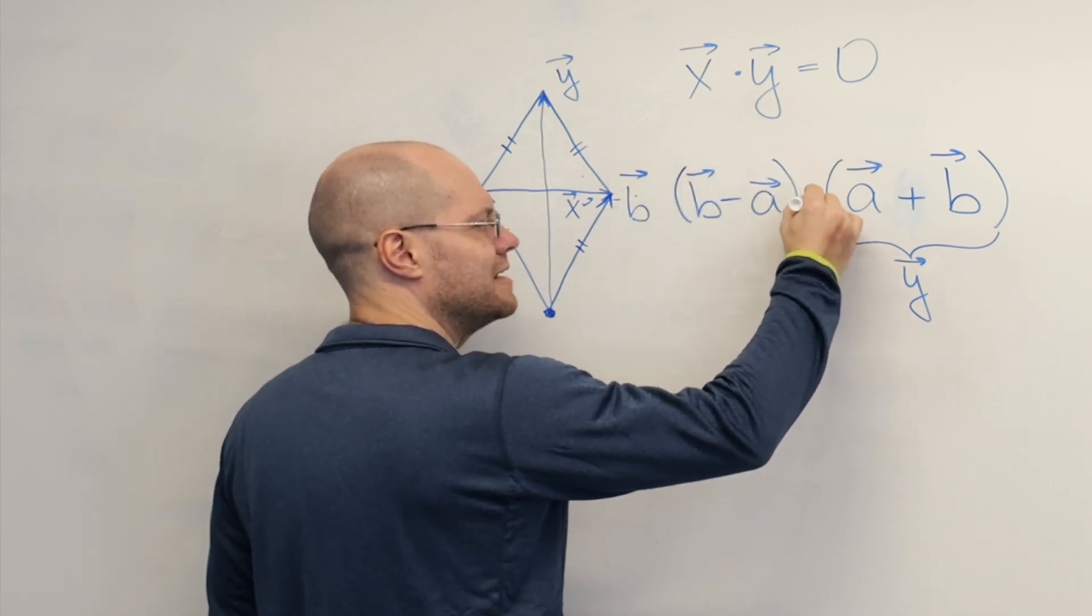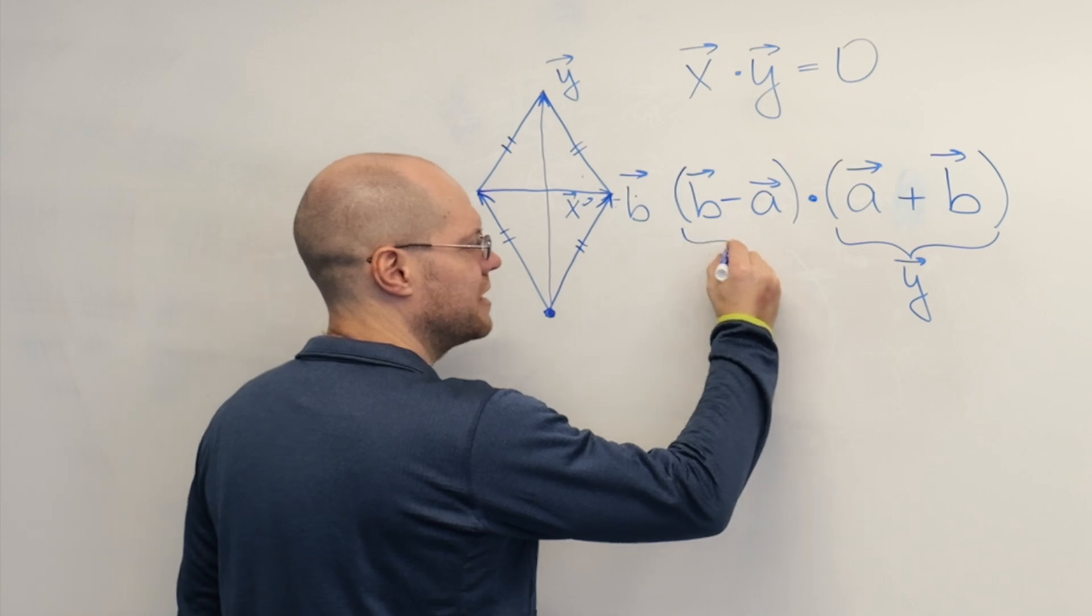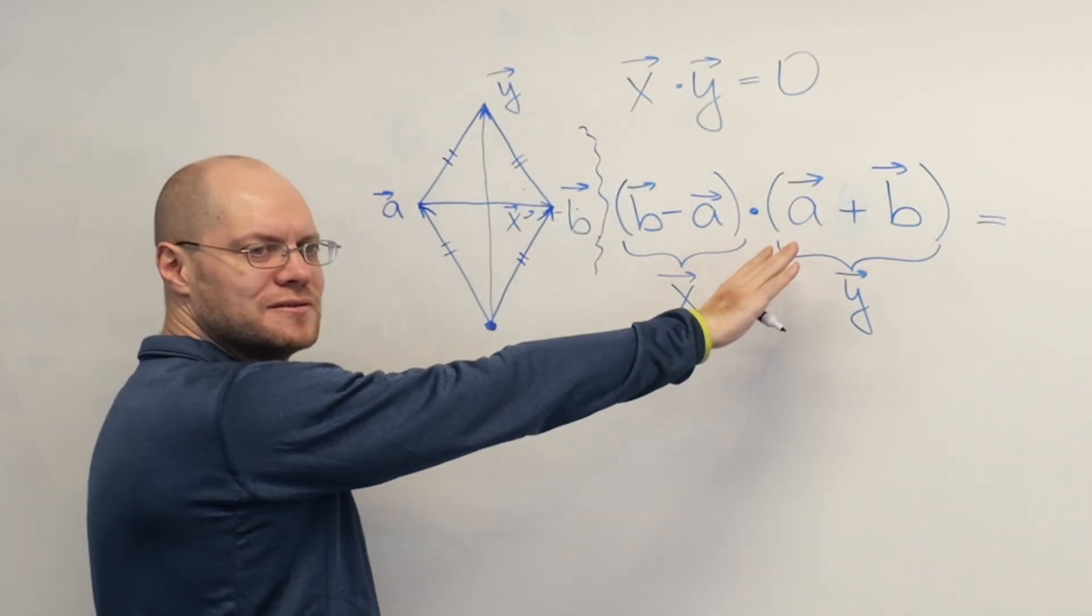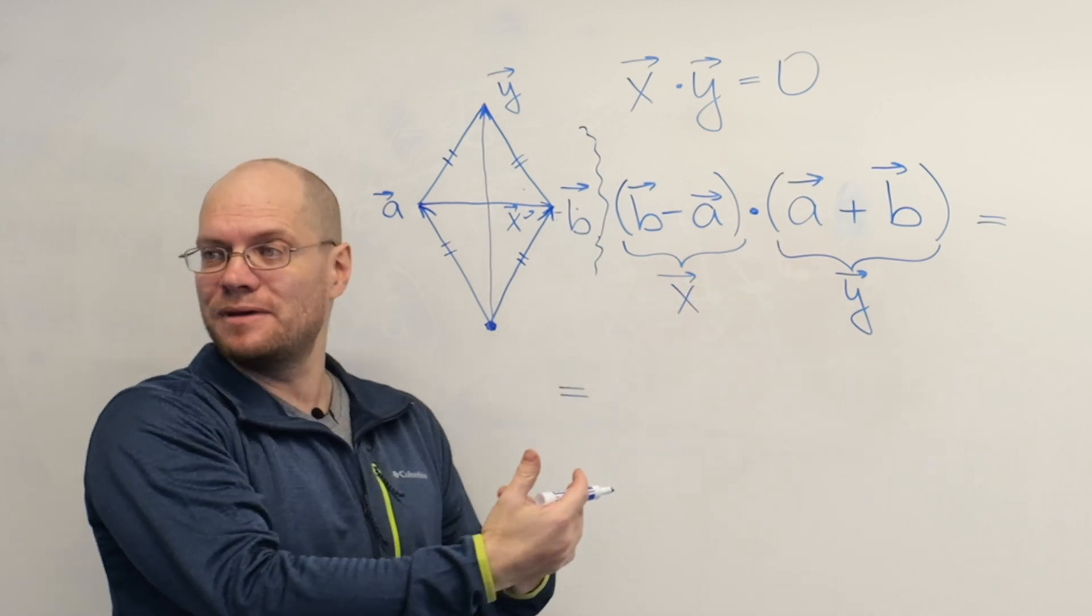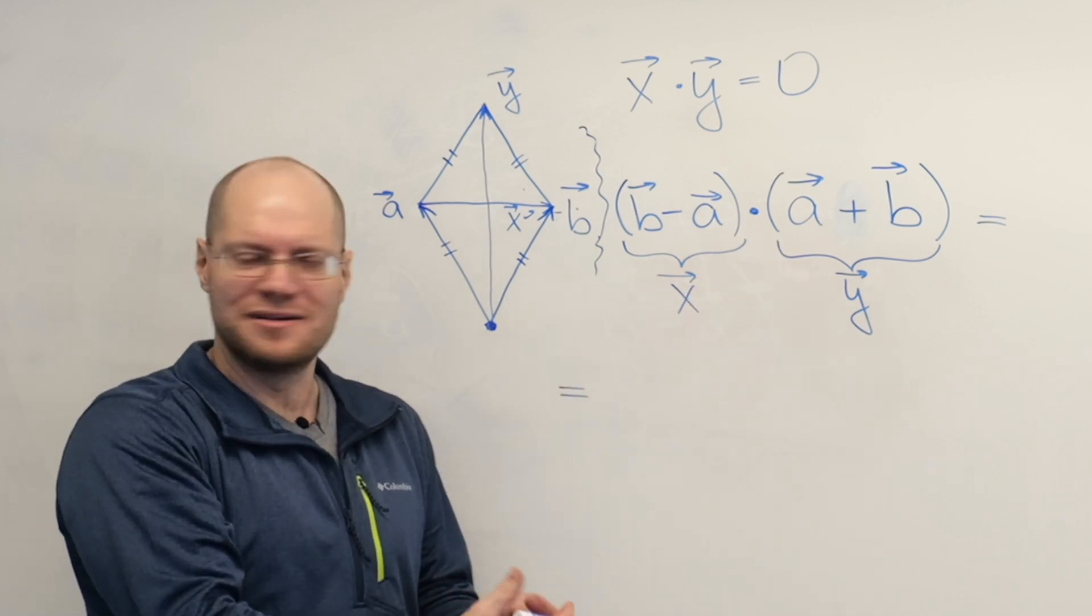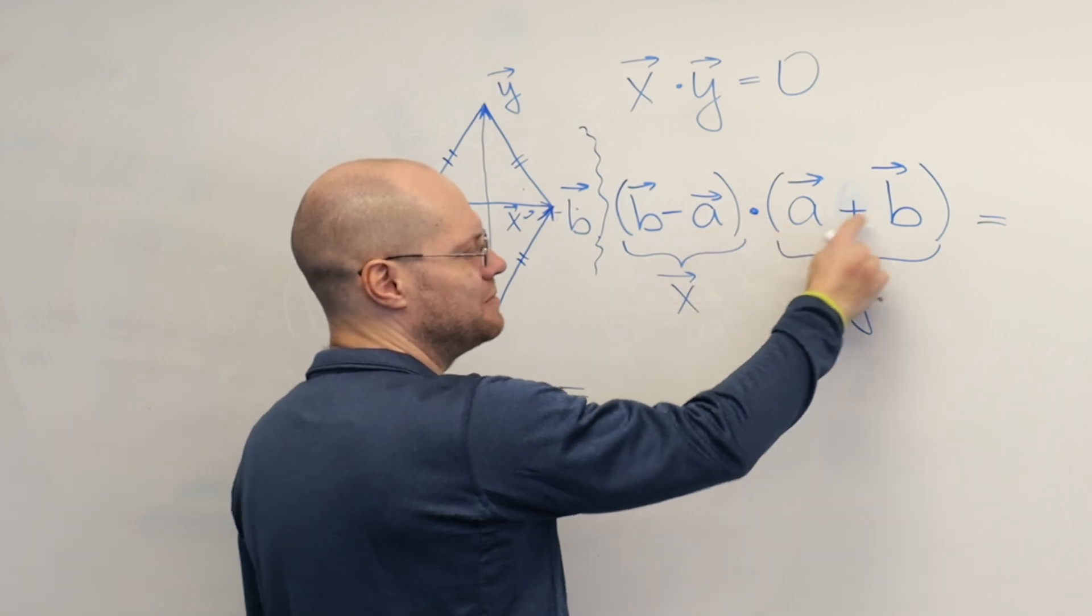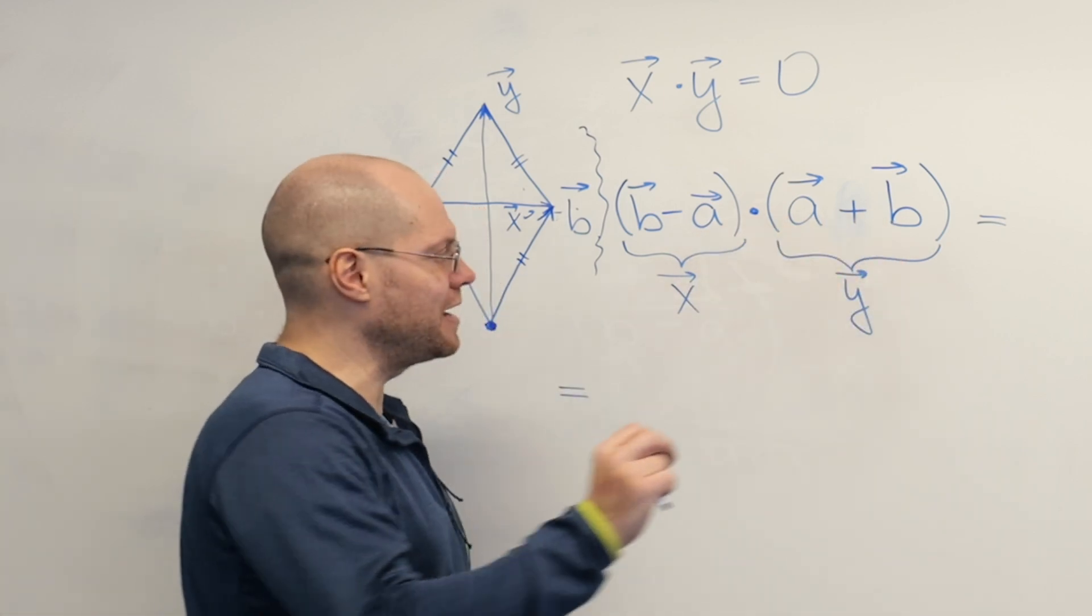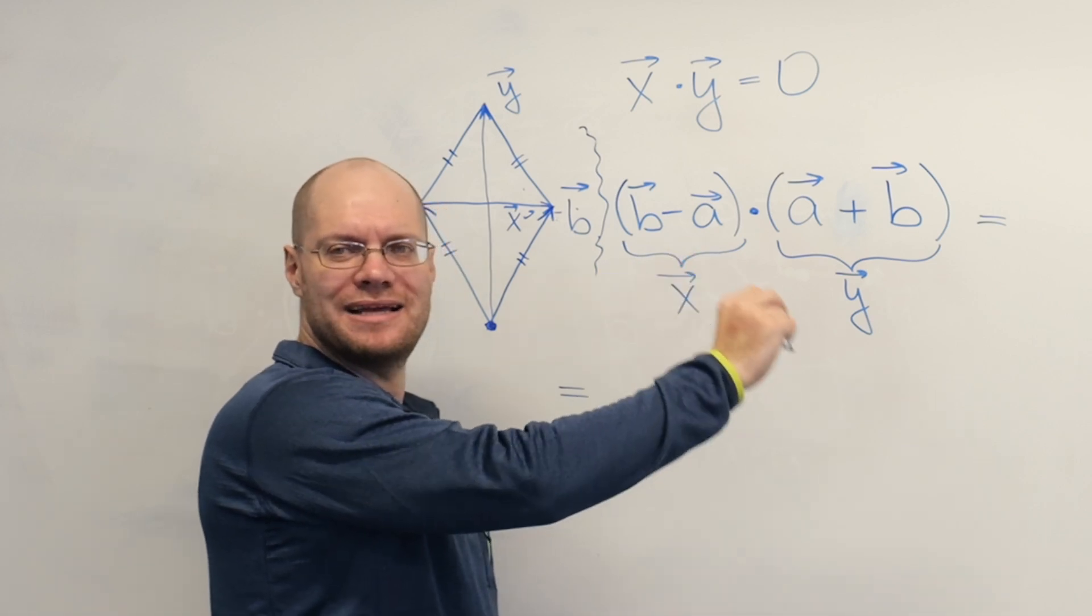And I'm dotting them. Let me show off my curly brackets. So now multiplying this out, it will actually end up being the difference of squares formula. Because it's b minus a times b plus a, right? So we'll end up with, in terms of dot products, b dot b minus a dot a.